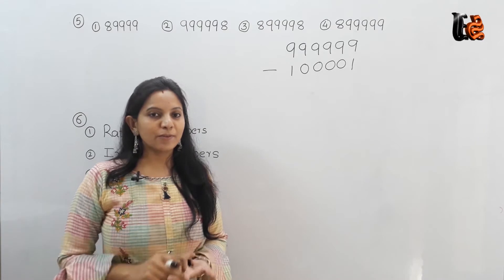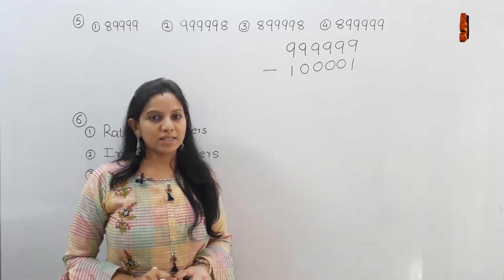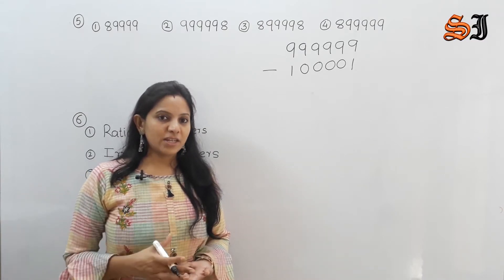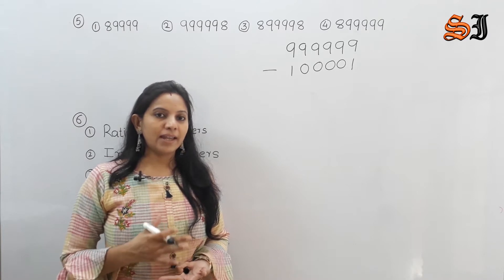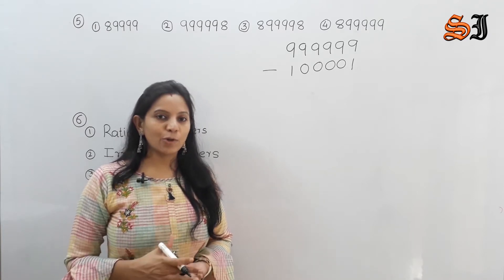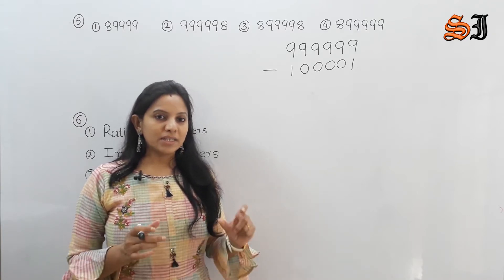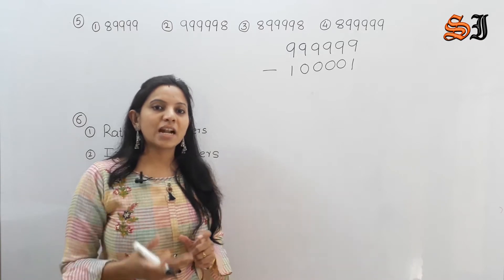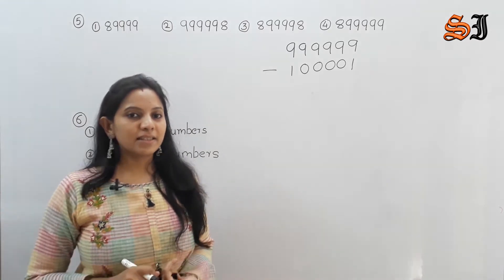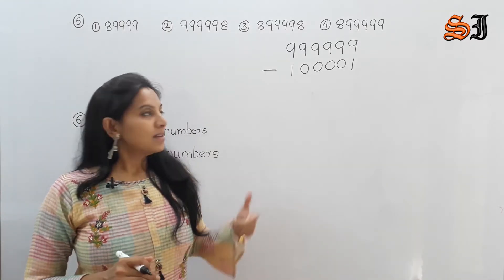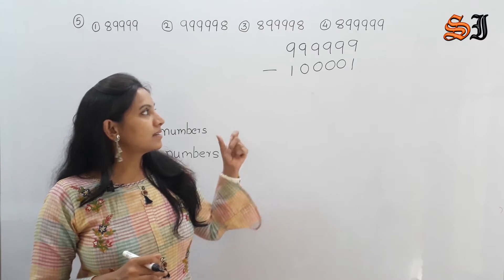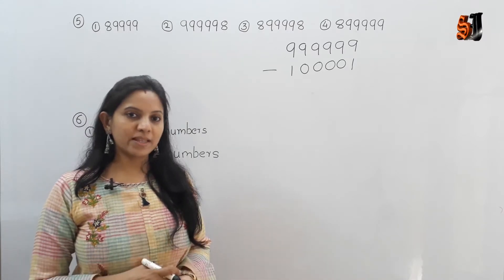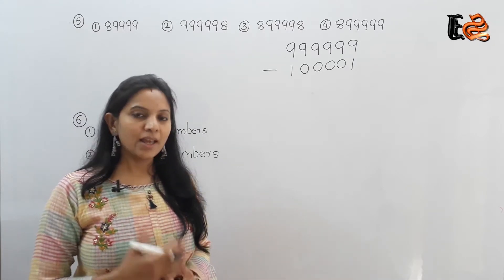How do we find the greatest number and smallest number? Suppose the greatest 3-digit number is 999. Then 999 plus 1 is 1000, which means 1000 is a 4-digit number. So 4-digit numbers start from there. The greatest 4-digit number is four nines; the greatest 5-digit number is five nines.